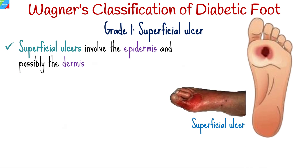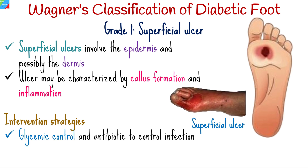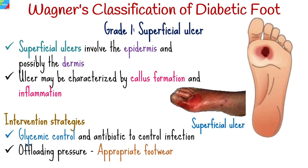Grade 1: Superficial ulcers involve the epidermis and possibly the dermis. The ulcer may be characterized by callus formation and inflammation. Intervention strategies include glycemic control and antibiotics to control infection, and offloading pressure from the affected area using appropriate footwear or orthotic devices.